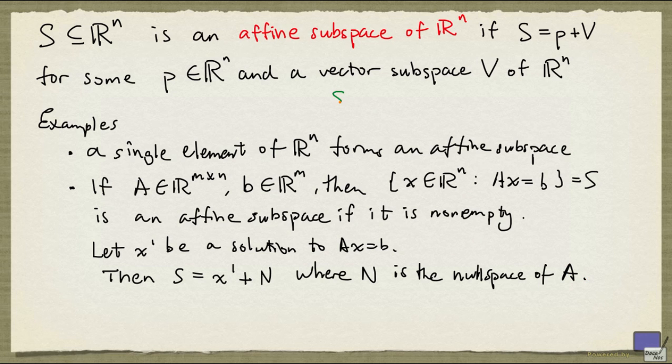If the affine subspace S is not equal to R^n, we say S is a proper affine subspace.